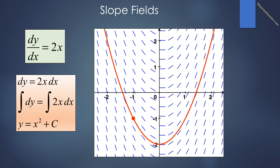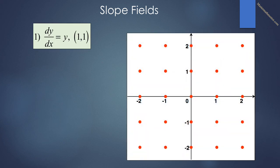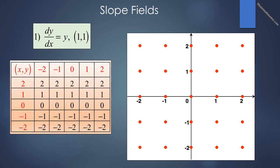Creating slope fields is very time consuming and we generally just examine a slope field based on integer values around the origin. We will start with one of the easier differential equations we will encounter: dy/dx = y. We would like to create a slope field for this for the points around the origin, that is the integer value points where x runs from -2 to 2 and y runs from -2 to 2. After that we would like to look at the specific solution going through the point (1, 1). We will look at the slopes for all 25 points.